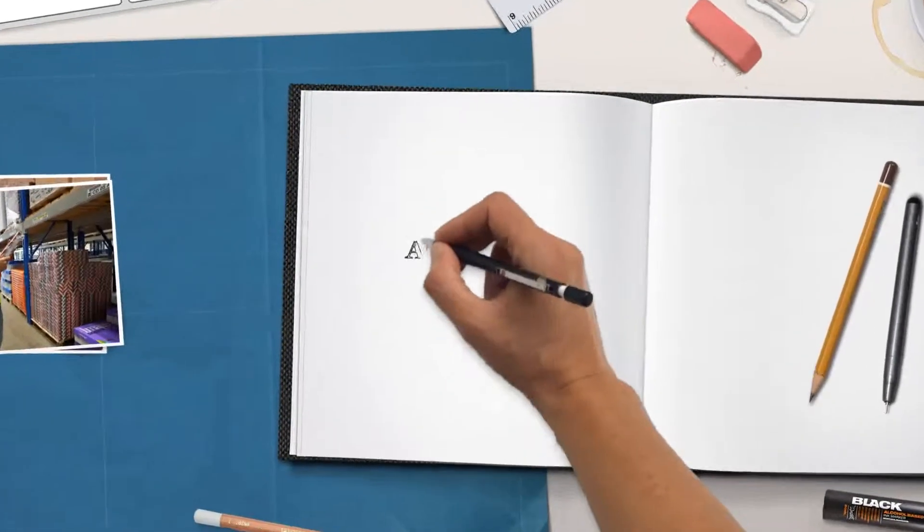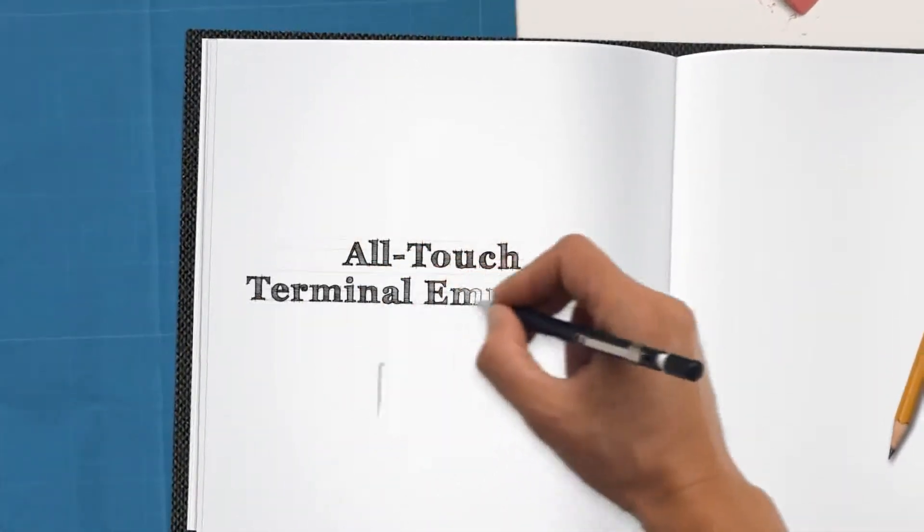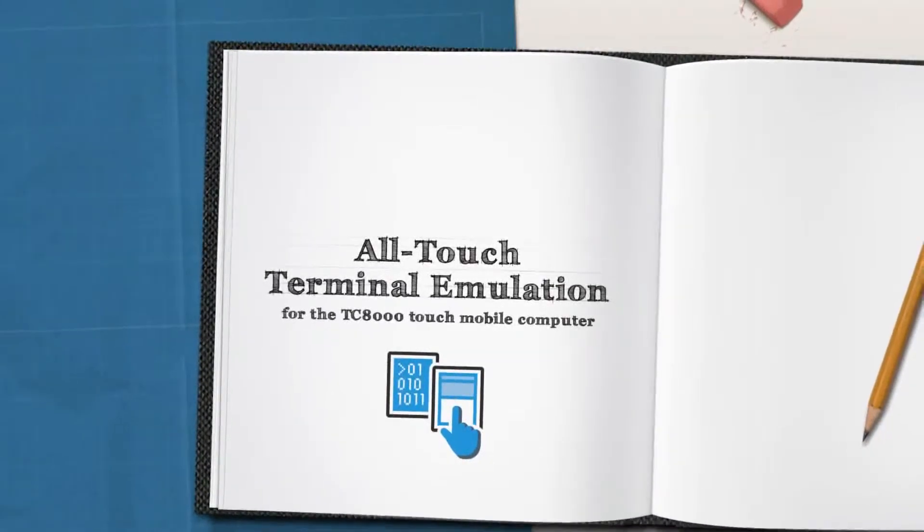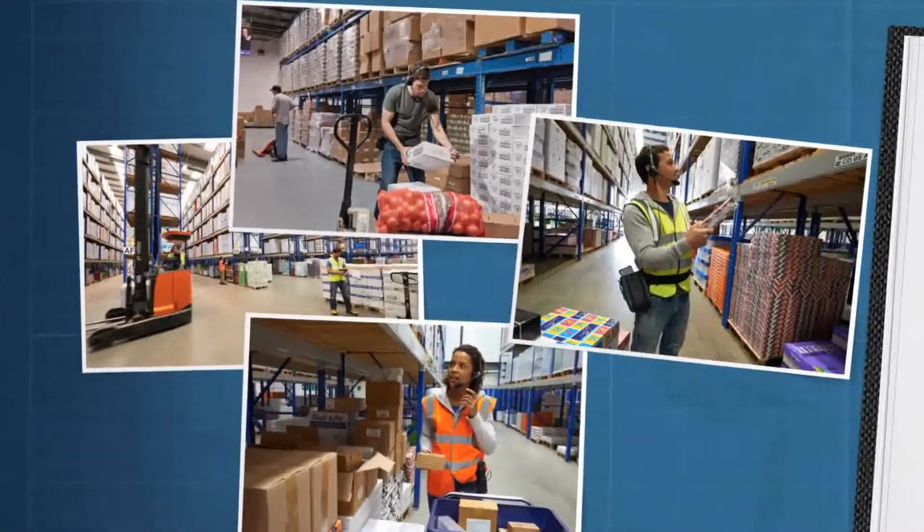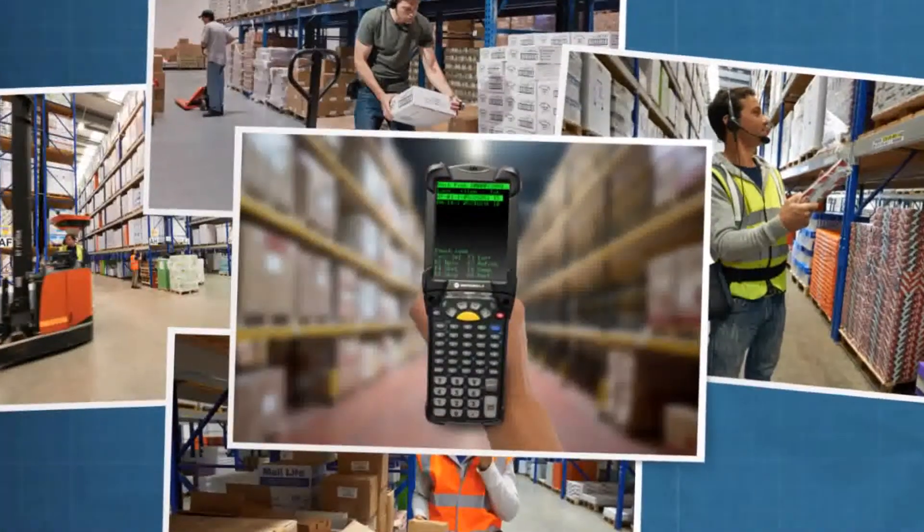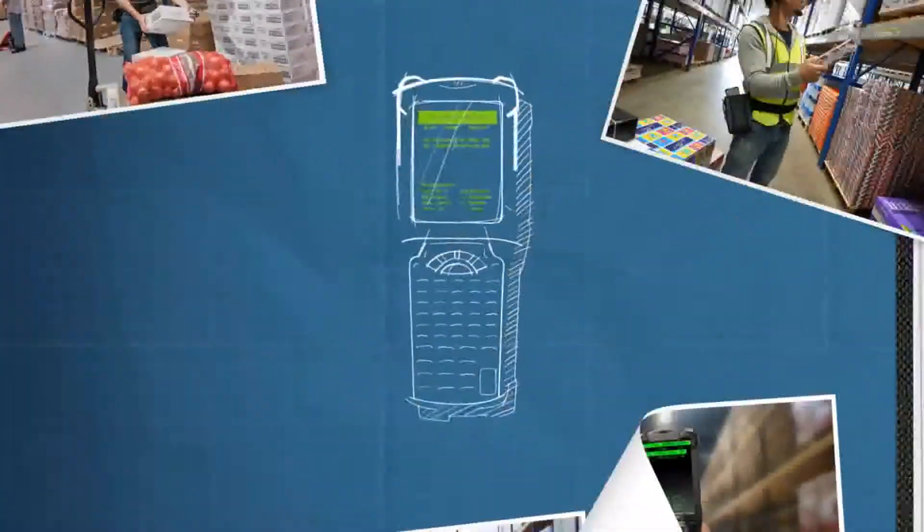What's on the board for today? All-Touch Terminal Emulation. What do we know? There are all these warehouses where workers scan and pick. They're using our key-based terminals with terminal emulation software from the 80s.